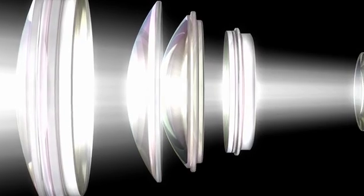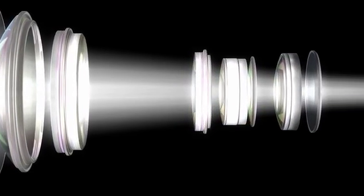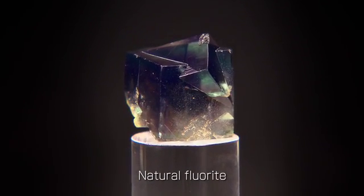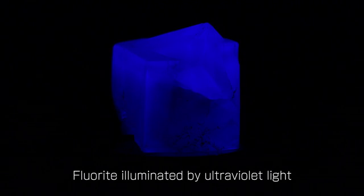This approach alone, however, will not ensure ultra-high resolution images for SuperTelephoto lenses. The solution, instead, lies in a time-honored mineral that is ideal for correcting chromatic aberration: Fluorite.